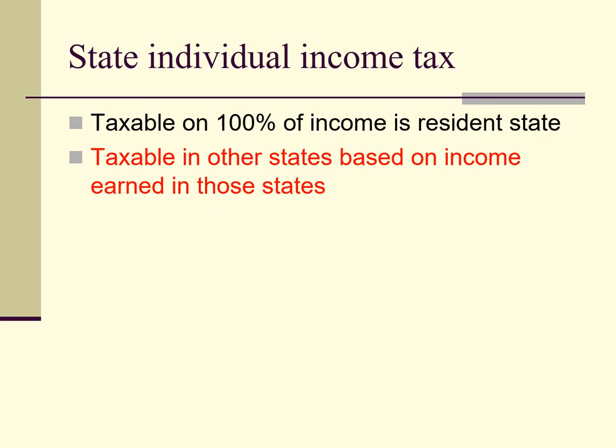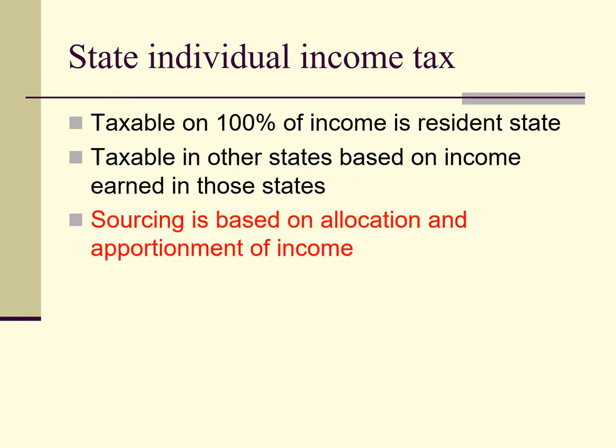In addition, where income is earned in multiple states, states in which an individual is not a resident tax the individual on income earned or sourced in those states. For example, in the case of Webco, one or more of the other five states may tax the income earned in those states. The income taxed in those states is a combination of income allocated to those states and income apportioned to those states.